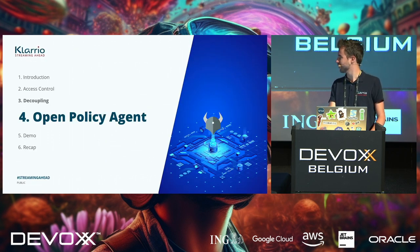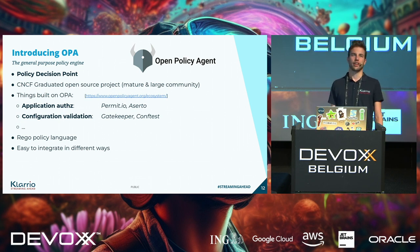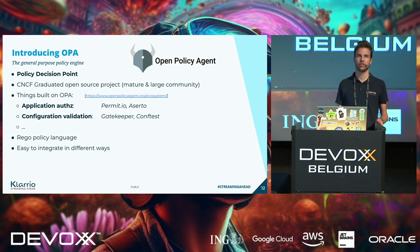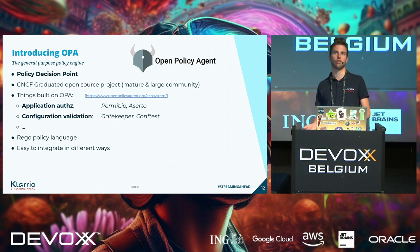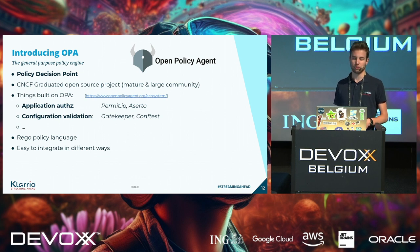Let's start discussing Open Policy Agent. Open Policy Agent is an example of such a policy decision point — it's a general purpose policy engine and a CNCF graduated open source project. CNCF graduation implies there is a large group of people behind it; only projects with a proven track record and an open governance model can apply for CNCF graduation. That's what made it an ideal building block for us.